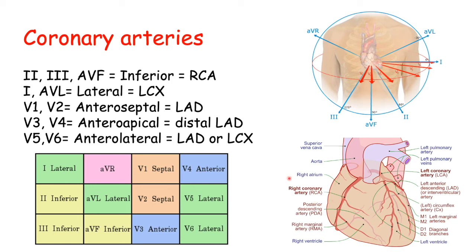If we see changes in leads 1 and AVL, showing the lateral side of the heart, that is most likely the left circumflex artery. V1 and V2 show more the septum of the heart, and that is most likely a left anterior descending blockage. V3 and V4 show the anterior side and more the apex of the heart — that is likely the distal left anterior descending. V5 and V6 show more an anterolateral aspect, and that can be either the left anterior descending or left circumflex artery.